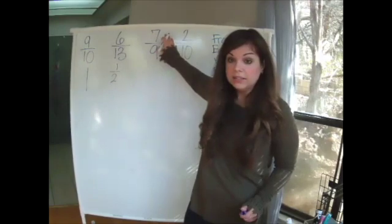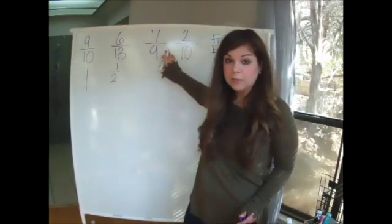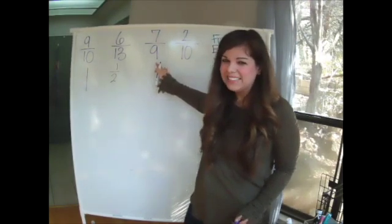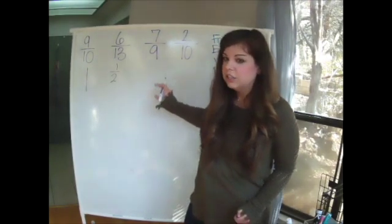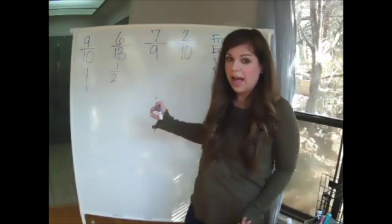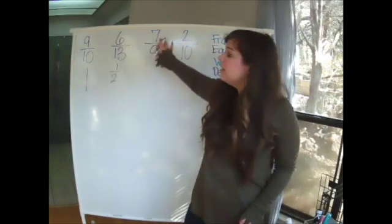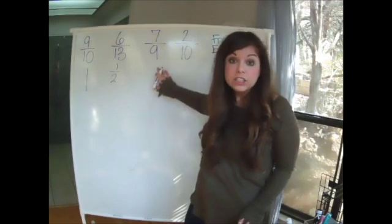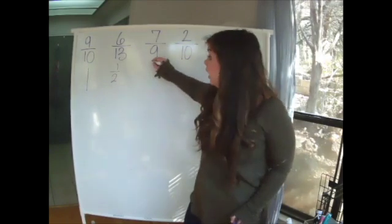The next one, seven out of nine. Seven out of 14 would give me a half and nine is not that close to 14. So I don't think it's closest to a half, but seven is almost nine. So I can say that this is closest to one whole.